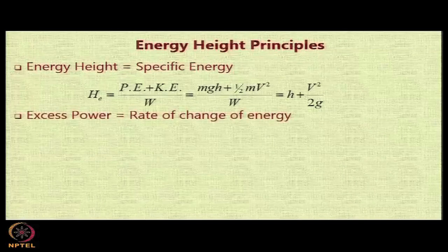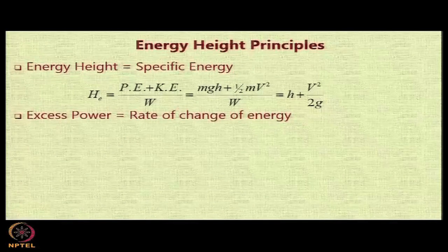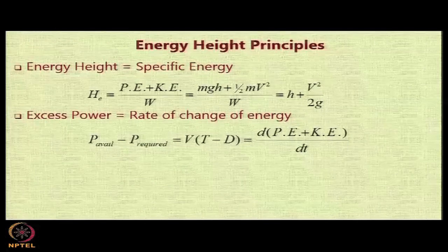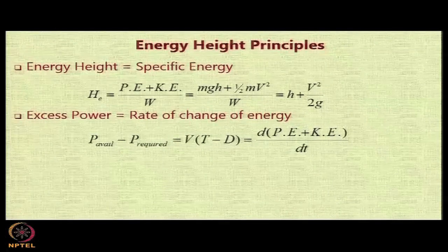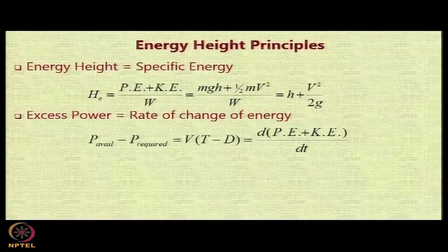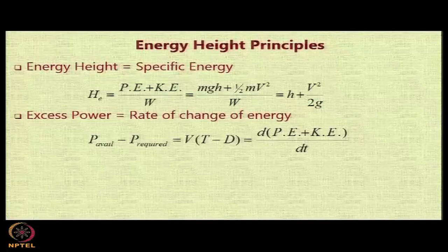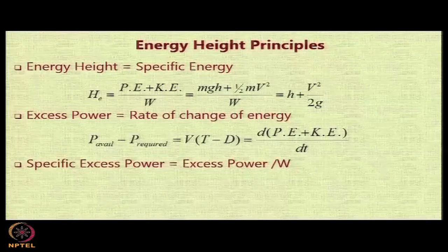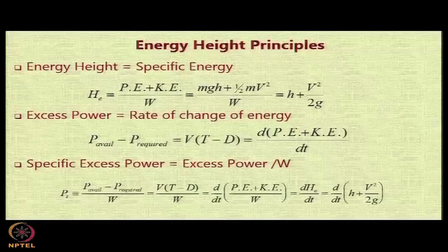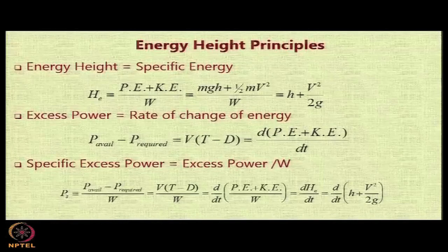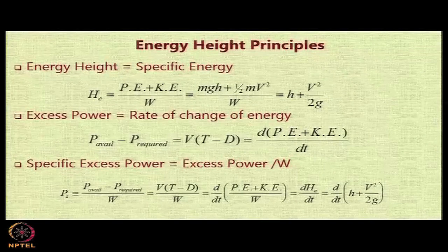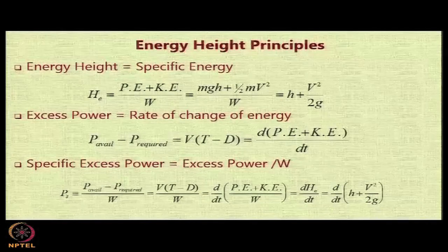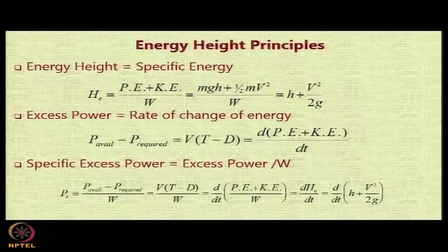Now, the excess power that an aircraft possesses is basically equal to d by dt of the energy or the rate of change of the energy. The excess power is T minus D into v. T into v is the power available and D into v is the power required. Hence the specific excess power will be excess power divided by the weight of the aircraft. In other words, Ps, which is the symbol used for specific excess power, will be P available minus P required divided by W, or v into T minus D upon W, which is also equal to the rate of change d by dt of h plus v squared by 2g.